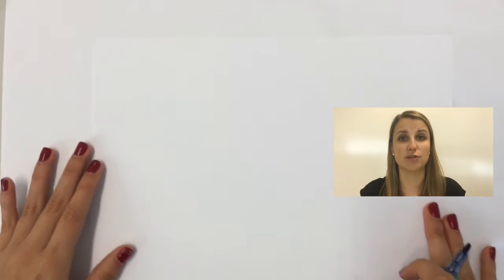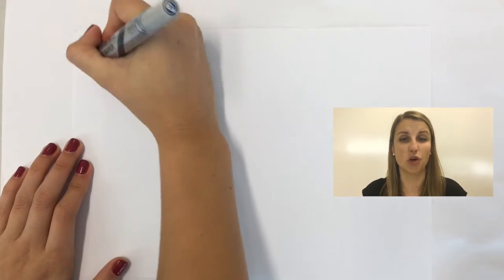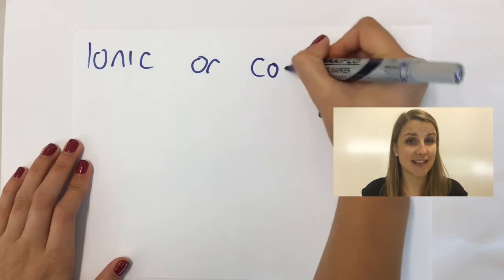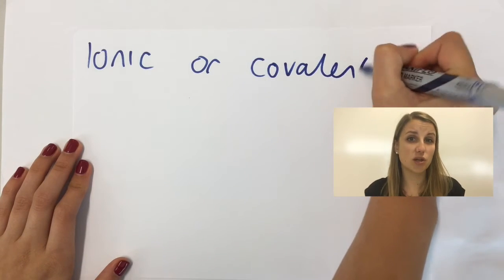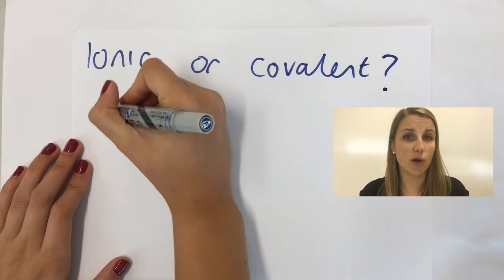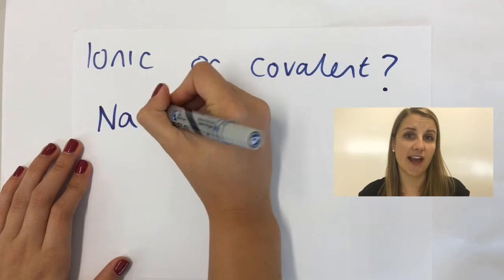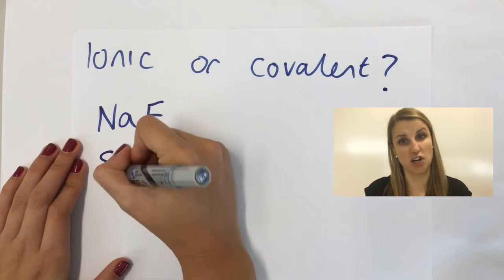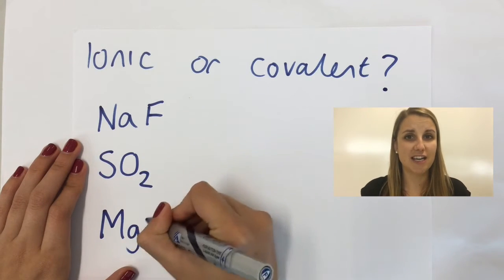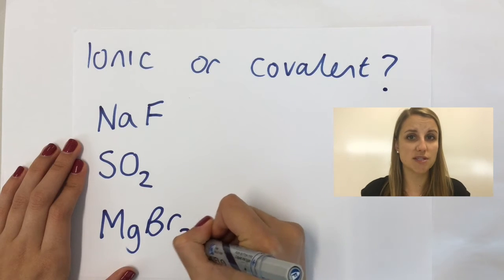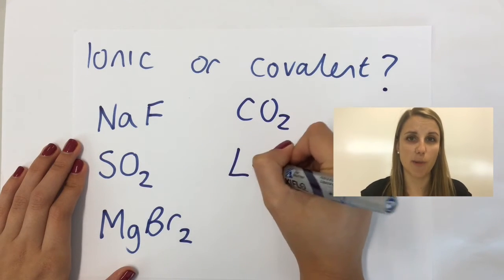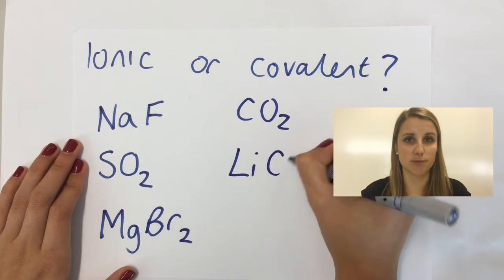Now we're going to play a game that I like to call 'ionic or covalent.' I would like you to look at these six examples and decide whether you think they contain ionic bonds or covalent bonds, just looking at whether they're made up of a metal and a non-metal, or a non-metal and a non-metal. You're going to need a periodic table for this, so pause the video and for each one decide what type of bond it forms. Pause now.